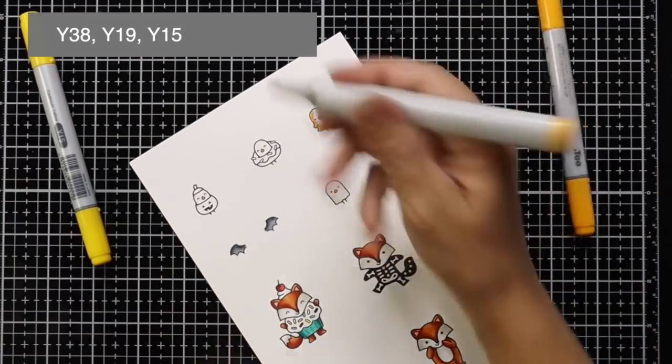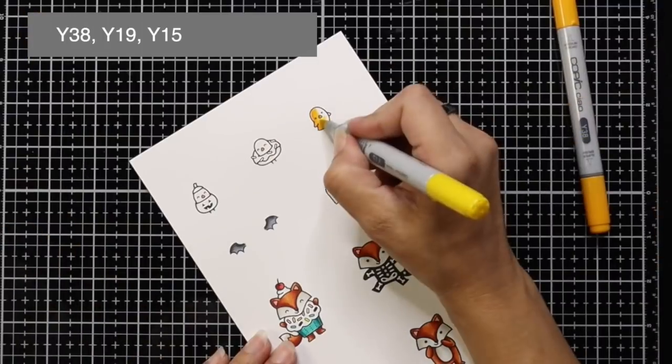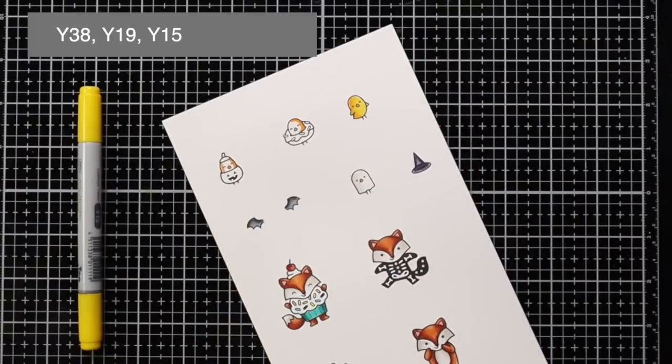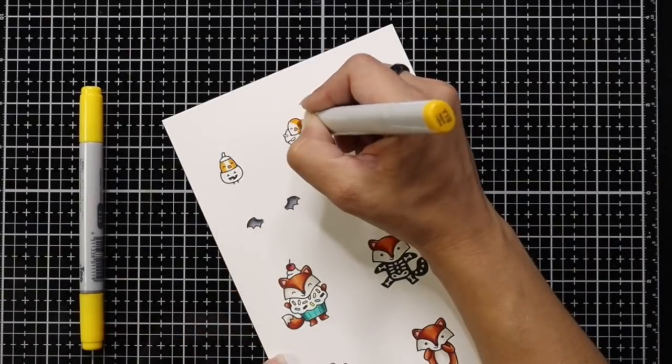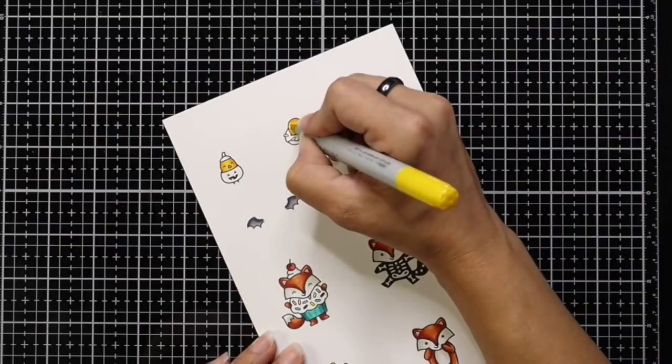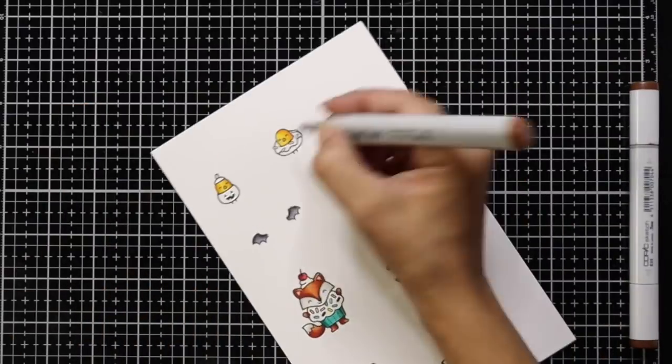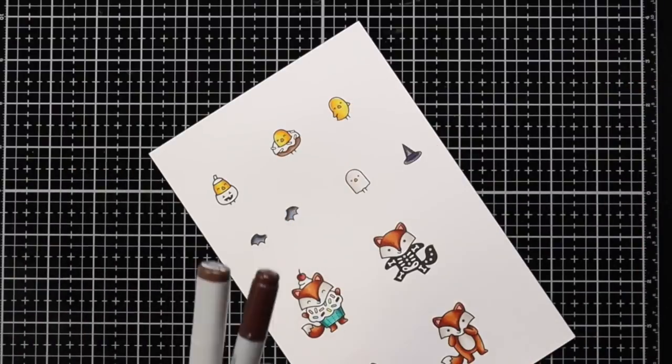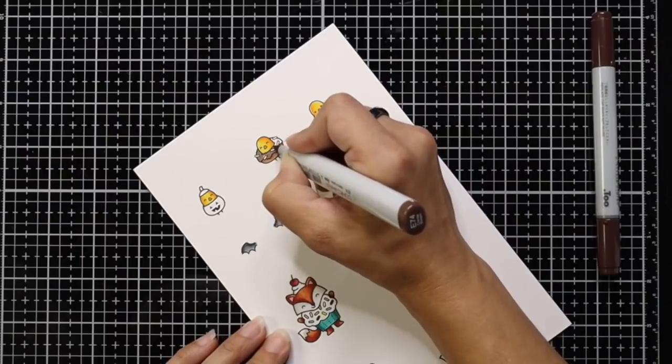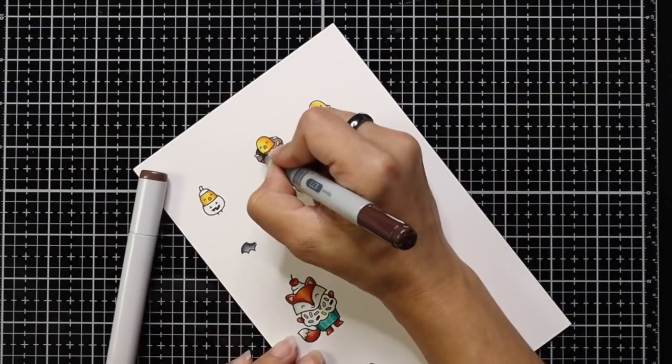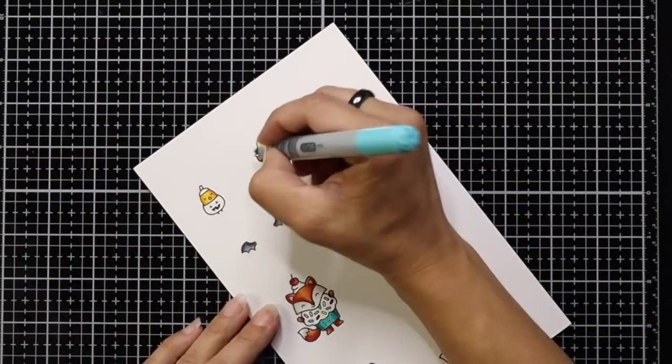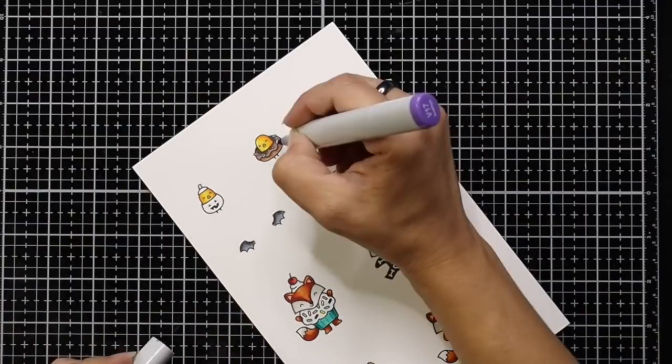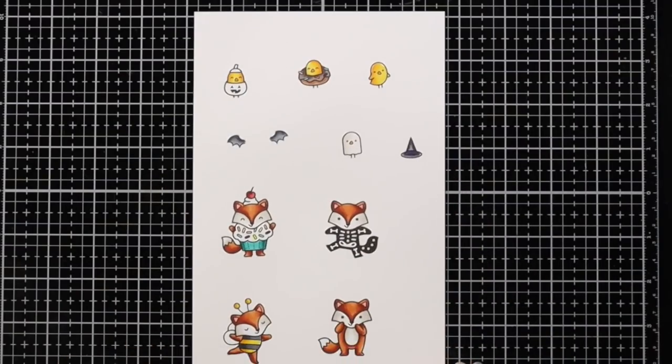And now for the chicks, I'm using those same yellow colors that I used for the bee costume. Just adding a little bit of the shadow area and blending out. Now you don't always have to use a three or even two color combination. You could just color them straight with one color if you want. Another trick you can use is you can use like a yellow color, and then for your shadow areas, use a light gray.